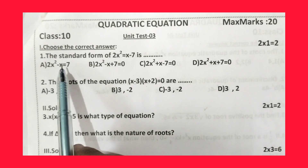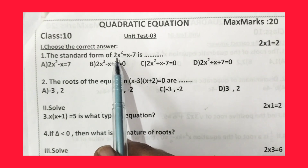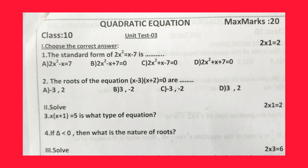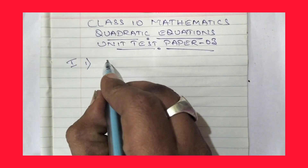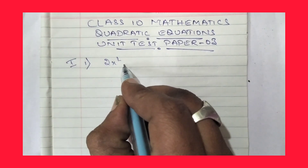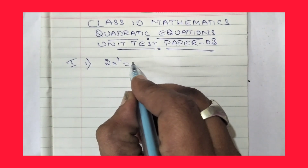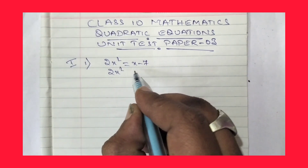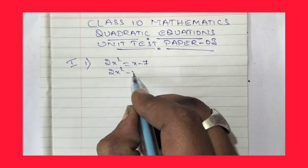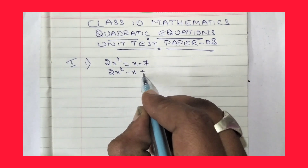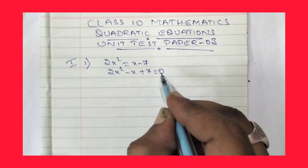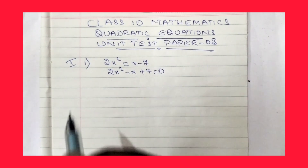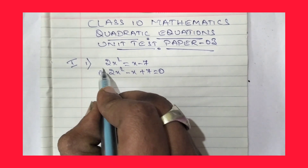The first question is: the standard form of 2x² = x - 7 is dash. The equation given is 2x² = x - 7. So, 2x² minus x plus 7 = 0. This is the standard form. Therefore, option B is the right answer.